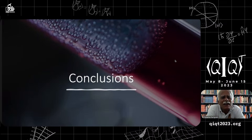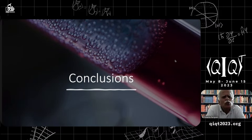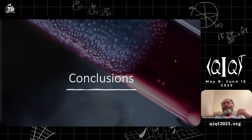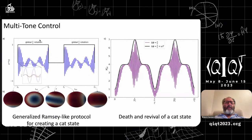An audience question: would this system be affected by decoherence? Sanders replies: yes, the nuclear cat state would be affected by decoherence. Part of what Pragati is doing with the multi-tone pulse is making the dynamics fast enough to realize things before decoherence sets in. But these are tiny objects and they're remarkably coherent.